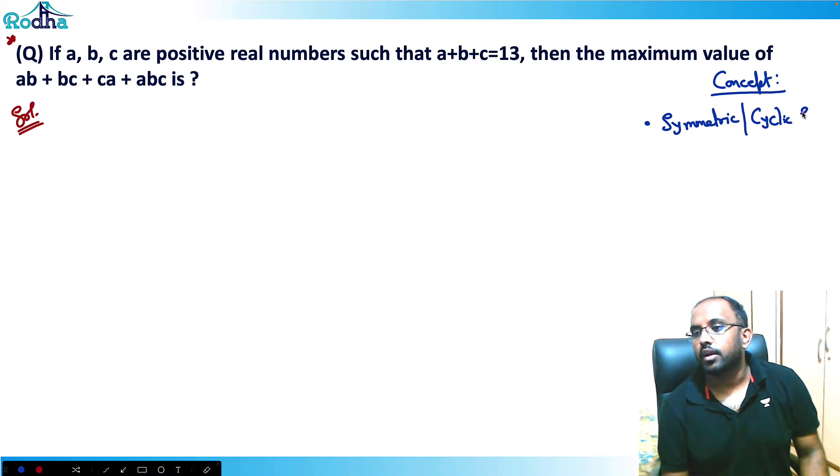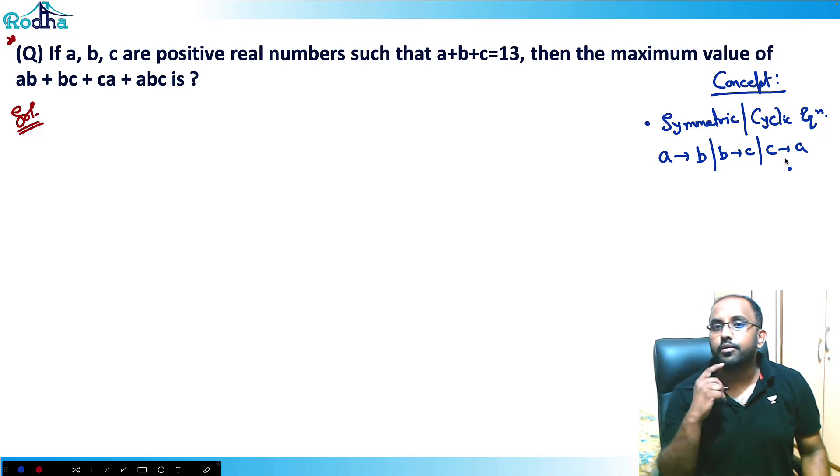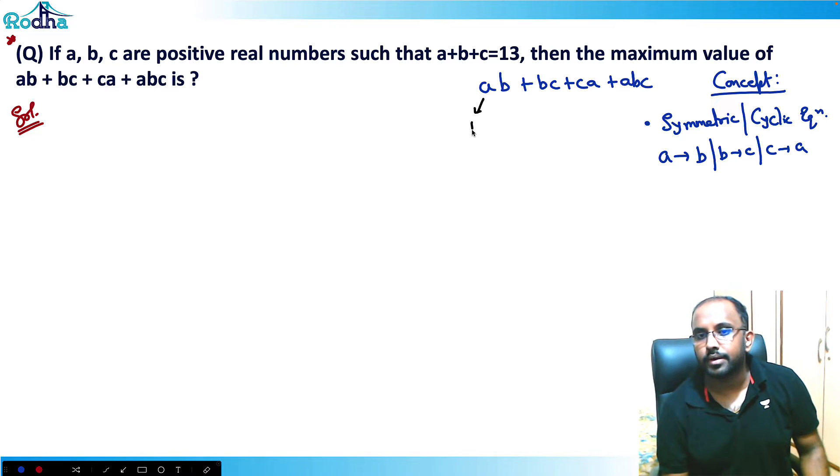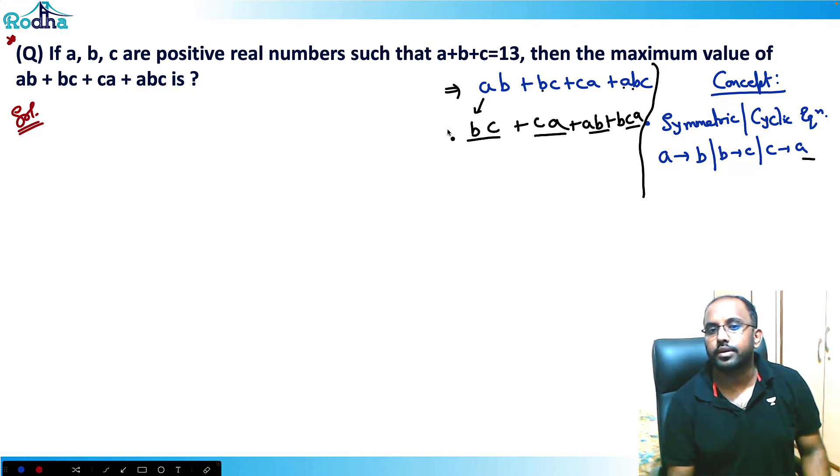Why is it called symmetric or cyclic equation? Because in these equations, if I interchange the variables - for example, if I replace a with b, b with c, and c with a - then my equation will not change. See in this equation, if I replace a with b, b with c, c with a, the equation did not change. The equation remains the same, both equations are the same.